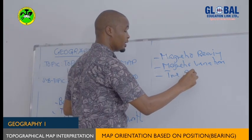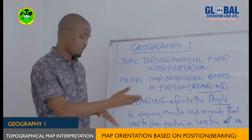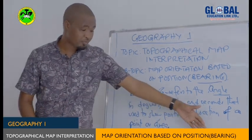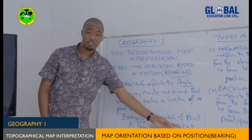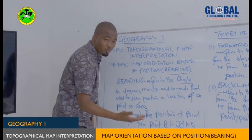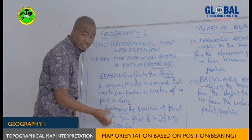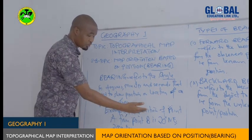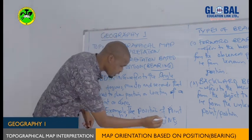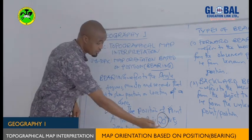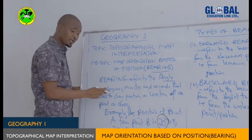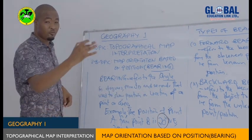So what is bearing? Bearing refers to the angle in degrees, minutes, or seconds that is used to show the position or location of a point or an area. For example, the position of point A from point B is 20 degrees northeast, 200 meters. So we are able to identify the position of point A from point B using bearing, because we are told the position of point A from point B is 20 degrees — that is a bearing of point A from point B. Bearing refers to the angle in degrees, minutes, or seconds used to show the position of a point or an area.